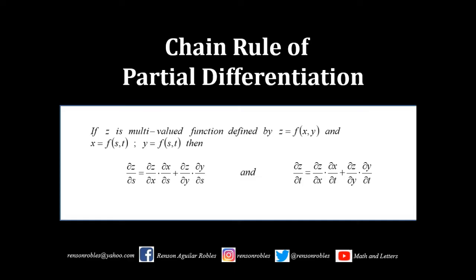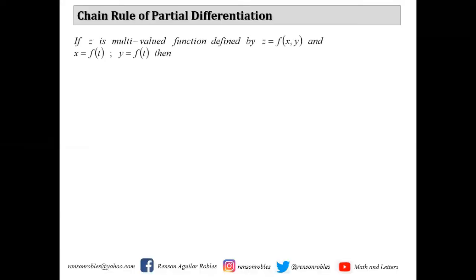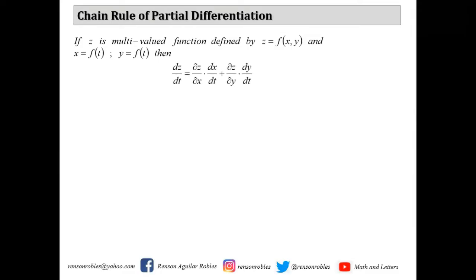If Z is a multi-valued function defined by Z equals F of X, Y, and X is a single-valued function in terms of T, and Y is also a single-valued function in terms of T, then the total derivative with respect to T is equal to the partial derivative of Z with respect to X times the derivative of X with respect to T, plus the partial derivative of Z with respect to Y times the derivative of Y with respect to T.